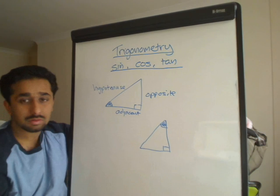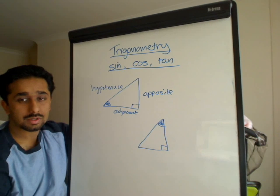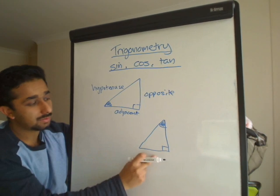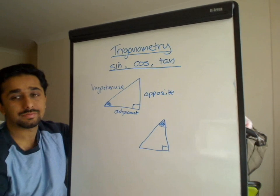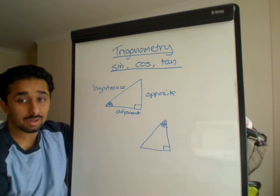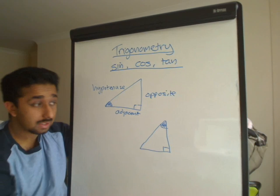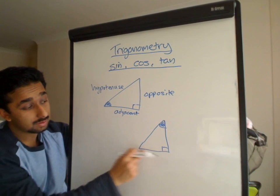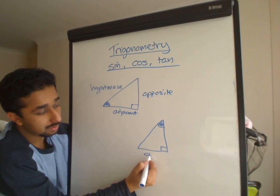Here is our angle. Which one is called the opposite now? Is it this one, this one, or this one? Well, the side opposite the angle is this one. So now this one is called the opposite.